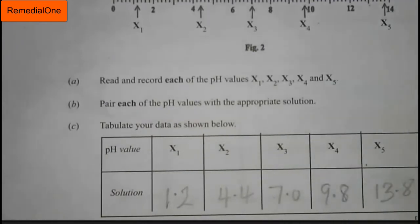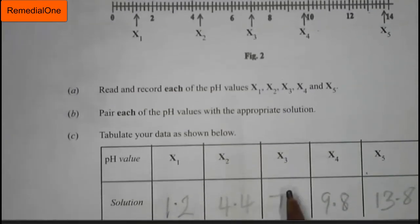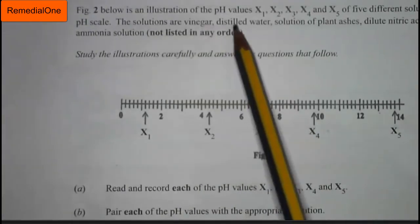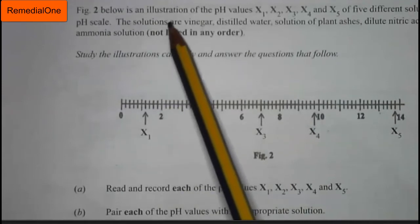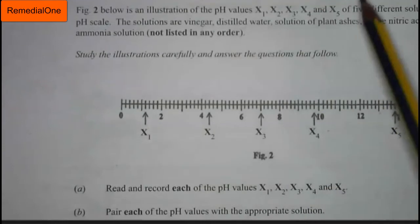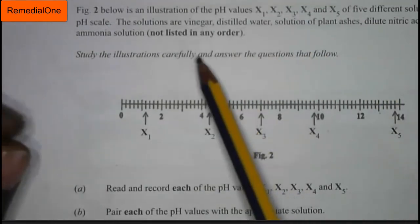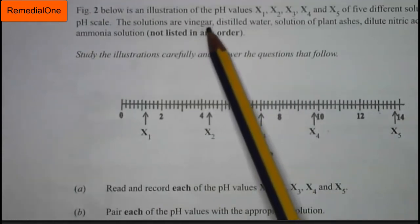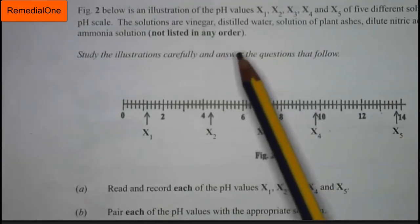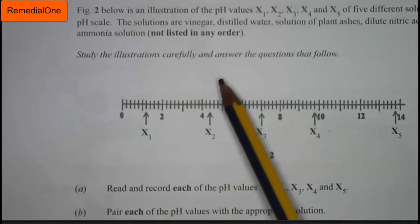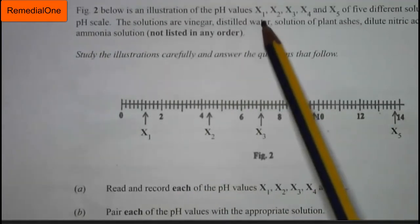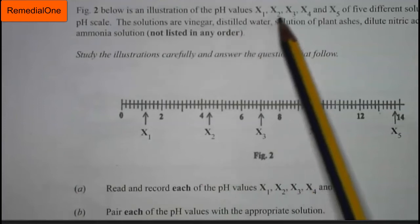The solutions given in the question are vinegar, distilled water, solution of plant ashes, dilute nitric acid, and ammonia solution. Vinegar is a weak acid and so it dissociates partially in solution to produce few ions, which gives a very low concentration of hydrogen ions. Distilled water is neutral — it doesn't contain any dissolved substances and so it is neutral.